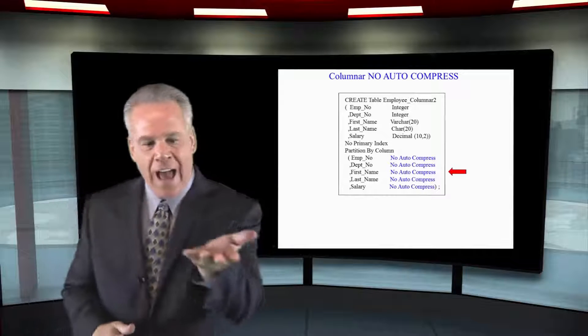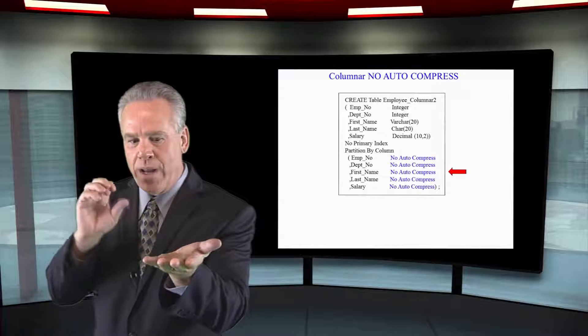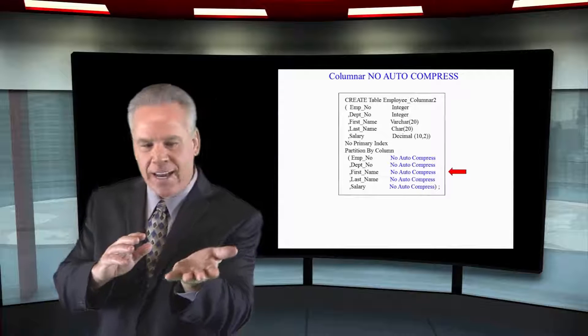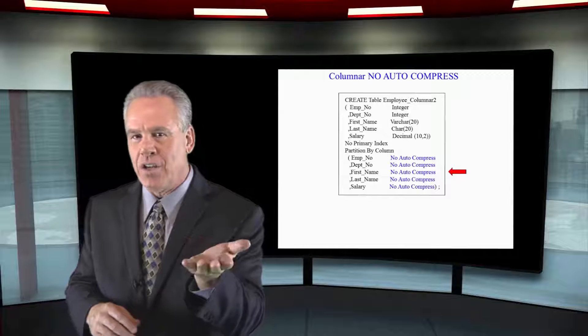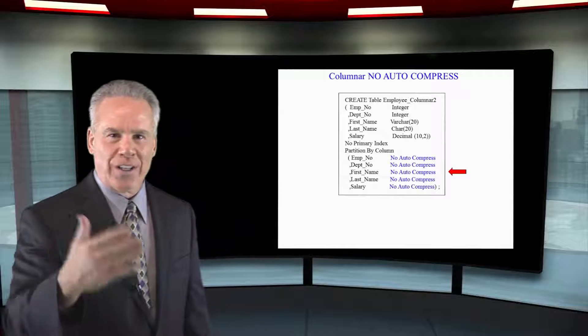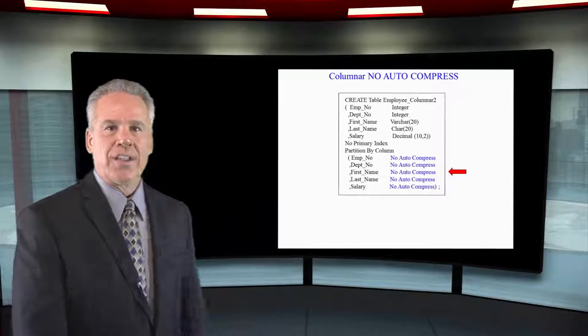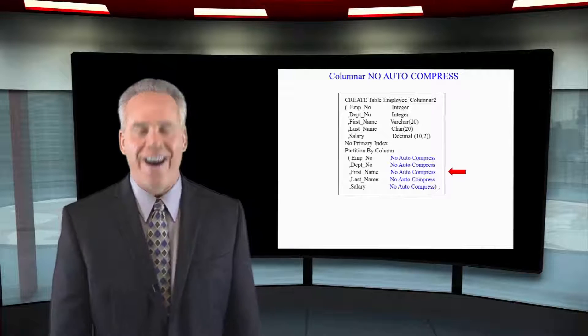Each column that comes in, Teradata says I've got a wide variety of ways to make that data smaller. I can compress it based on how many duplicates there are, how many white spaces there are, things of this nature. But it's going to take longer to load. So when you say no auto compress it will load faster because they will do no compression techniques on it.